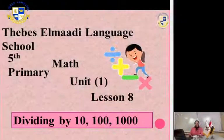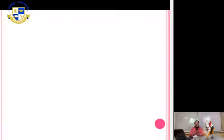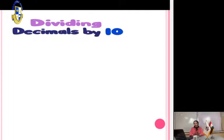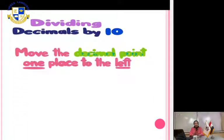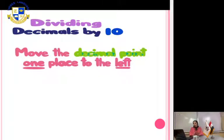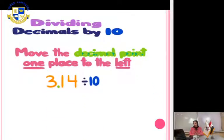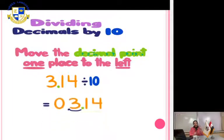Hi Primary 5, how are you today? I am Miss Hadir, your math teacher. Our lesson today is dividing decimals by 10, 100, and 1000. To divide any decimal number by 10, you have to move the decimal point to the left. We have 3.14 divided by 10 — count one digit to the left, then put the decimal point.